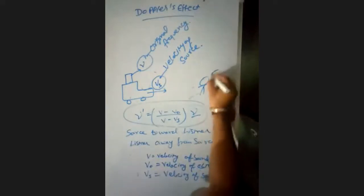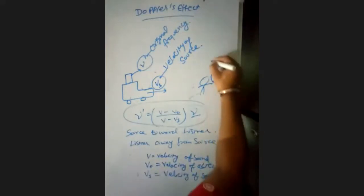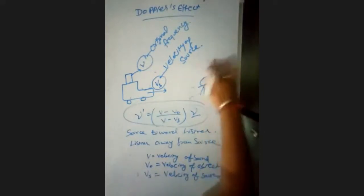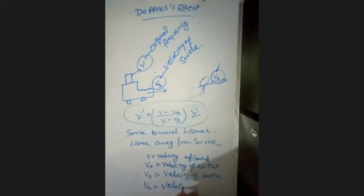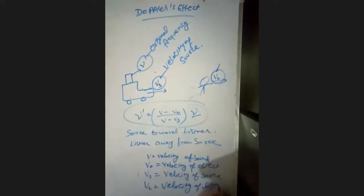The velocity of the listener is VL. I can say this as velocity of listener. VL is the velocity of listener.